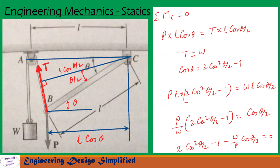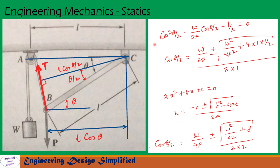From the diagram we established that T equals W. Substituting T equals W, and using the identity cos theta equals 2 cos²(theta/2) minus 1, we get P·L·(2 cos²(theta/2) − 1) equals W·L·cos(theta/2). After simplification this becomes 2 cos²(theta/2) − 1 − (W/P)·cos(theta/2) equals 0, and further simplification gives cos²(theta/2) − (W/2P)·cos(theta/2) − 1/2 equals 0. This is a quadratic equation.